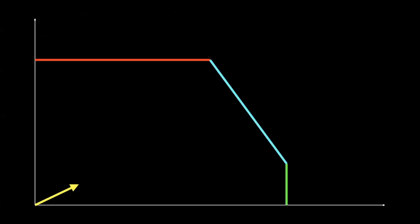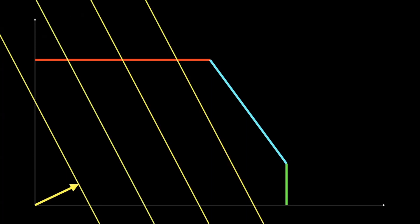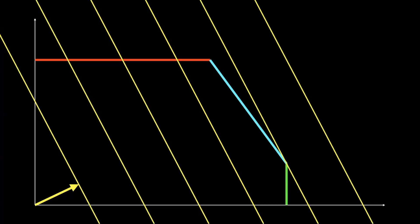Understanding the structure of linear programs and how to solve them builds intuition for all these other optimization problems. So what is a linear program? A linear program has two pieces: a direction we call the objective, and a collection of walls we call constraints. The goal is to find a point as far in this direction as possible, constrained by these walls. For example, the magenta star in this box gets a score of five.